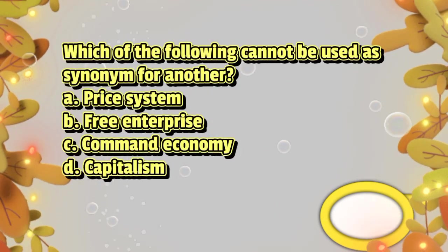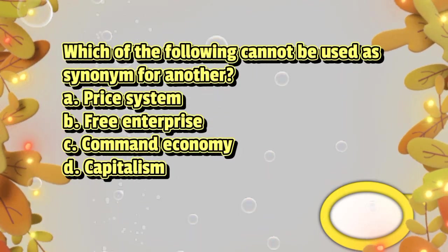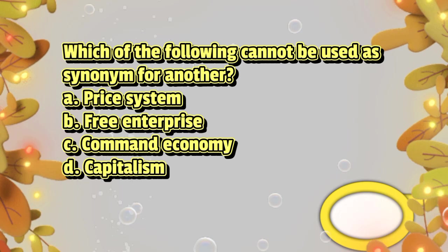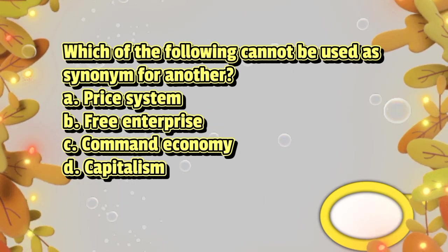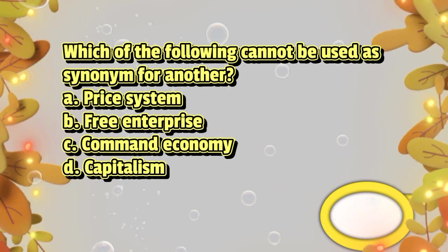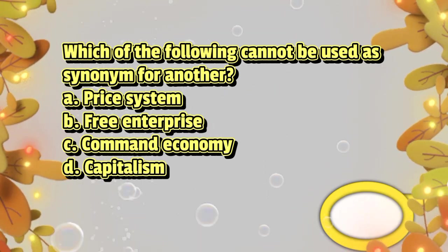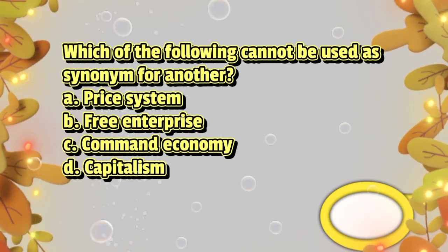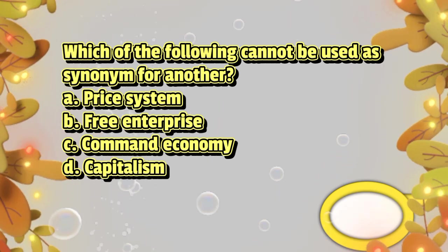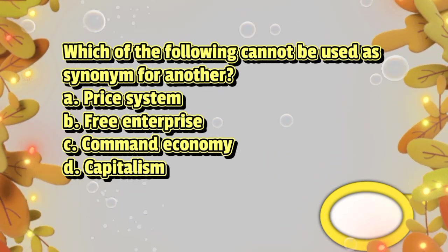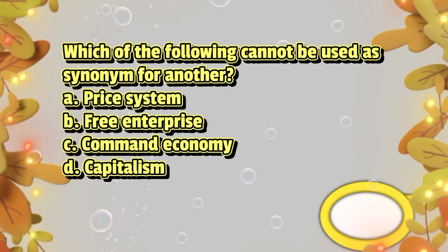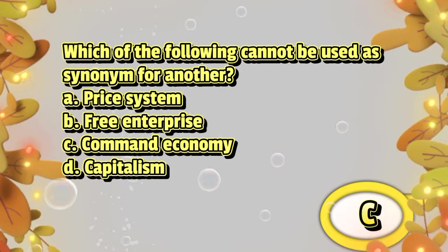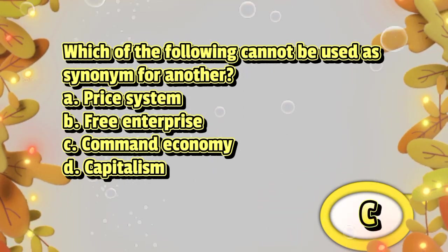Which of the following cannot be used as a synonym for another? A. Price system. B. Free enterprise. C. Command economy. D. Capitalism. The answer is letter C.